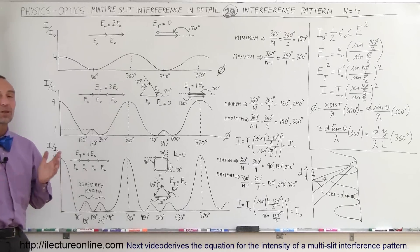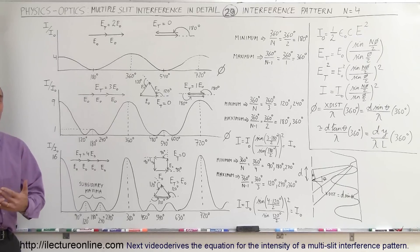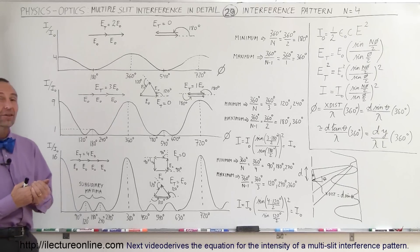Welcome to our lecture online, and now we're going to take a look at the n equals 4, what we call interference pattern system.